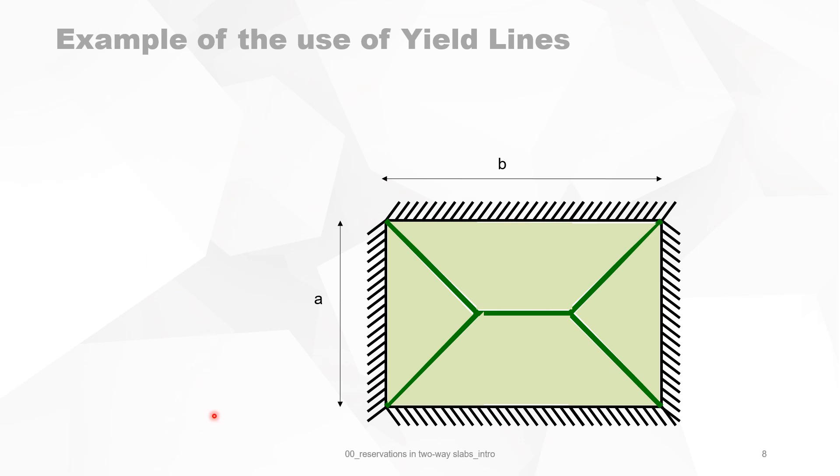Let's look at the following example of a rectangular slab simply supported on all sides with dimension B smaller than 2 times A, so we have a two-way slab. It's loaded with a uniform distributed load, and when you increase this load, the crack pattern will form, and you will see something like the green lines indicated on this drawing.